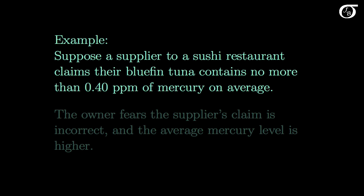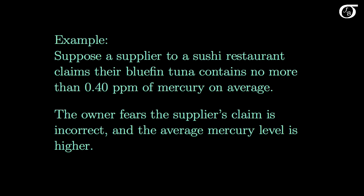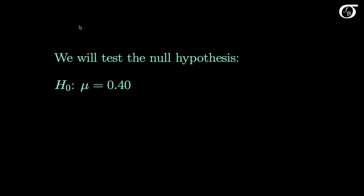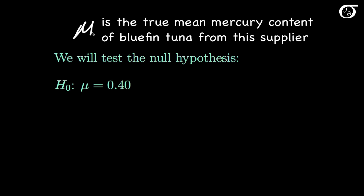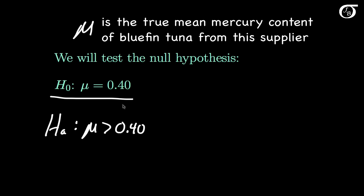Let's look at an example. Suppose a supplier to a sushi restaurant claims their bluefin tuna contains no more than 0.4 parts per million of mercury on average. The owner fears the supplier's claim is incorrect and the average mercury level is higher. We let mu represent the true mean mercury content from this supplier. The owner might test the null hypothesis that mu equals 0.4 parts per million against the alternative that the mean is actually greater than 0.40, since that might enable him to cancel a contract or get a rebate.